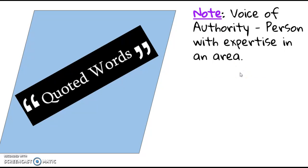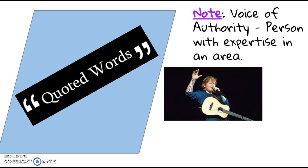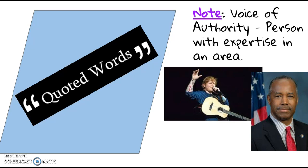Voice of authority. This is a person with expertise in an area. For example, if you were going to write an article or do a piece on music and what makes good music, you might want to quote somebody such as Ed Sheeran. Conversely, if you were going to do something on science and pediatric neurology, you might want to interview Dr. Ben Carson. You may not know him. Before getting into politics, he was one of the premier pediatric neurosurgeons down at Johns Hopkins in Baltimore, so he would know something about pediatric neurology. An expert. He has expertise in the area. Just because somebody is an expert in an area doesn't make them a person of authority in all areas. We will look at an example of that later.